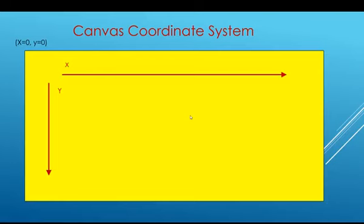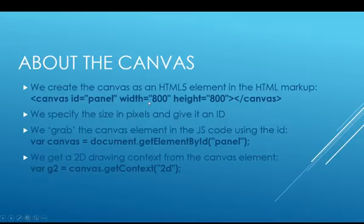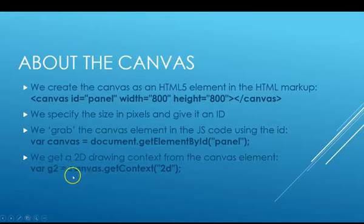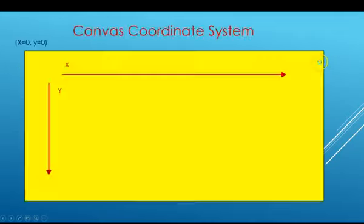When we do the translation so it doesn't affect the rest of the drawing, we save and then restore the graphic context. All the graphic primitives and functions we use to draw use this programmatic handle to the graphic system called the context. We get that from the canvas, and in the code I always call that G2. In methods where we pass that in, it's called 'context'. We get this at the very beginning, we don't change it again — we'll use it throughout the code.